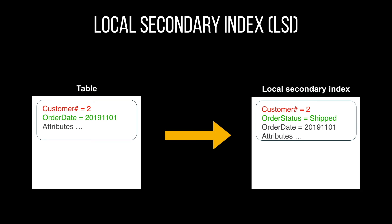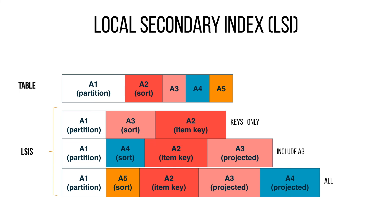Local secondary indexes allow you to re-sort data within a partition. For example, if your partition key is customer ID and sort key is order date, but you want all orders in a particular status for a customer, you create a local secondary index with the same partition key (customer ID) and a sort key of order status — then you can query all shipped or in-progress orders for a particular customer. When creating an LSI, you specify which attributes are projected into the index. There are three options: keys only, include (specific attributes plus keys), or all attributes.